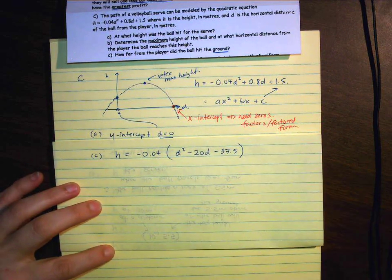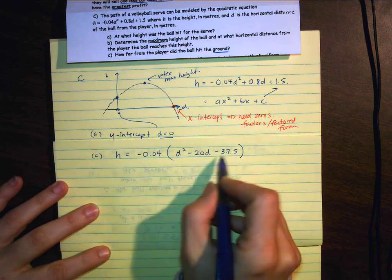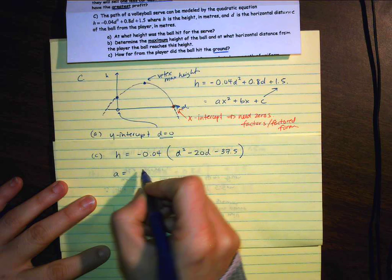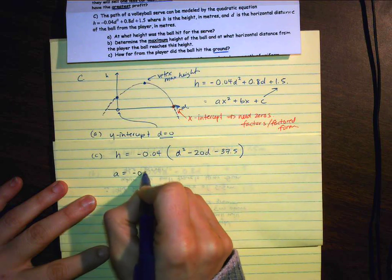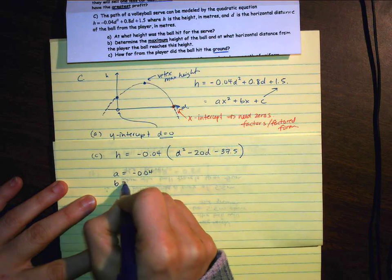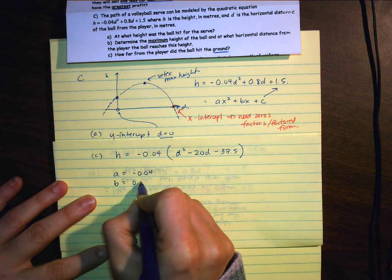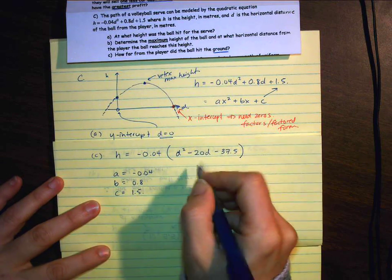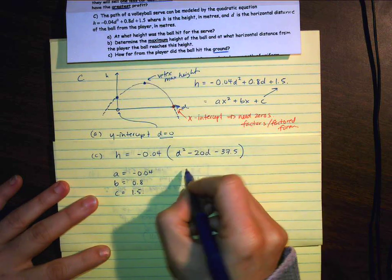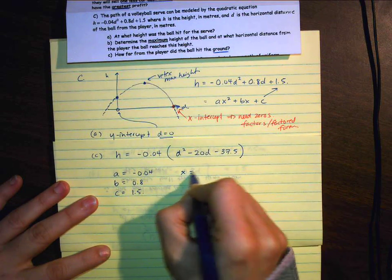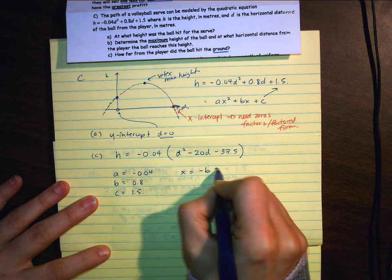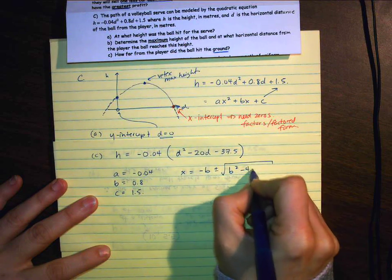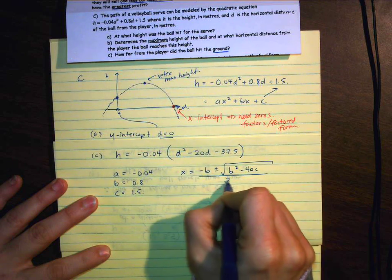1.5 divided by 0.04. It's not a nice number. So that means right there, I will need a quadratic. So there's really no sense in even having it in factored form. So let's go ahead and just say, a is equal to negative 0.04, b is going to be 0.8, and c is going to be 1.5. And the quadratic looks like this.